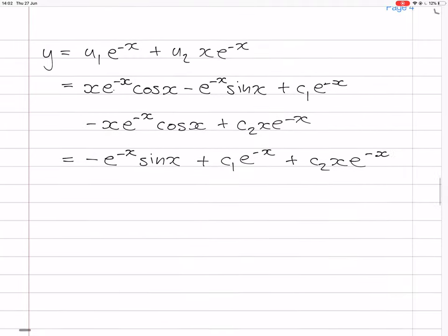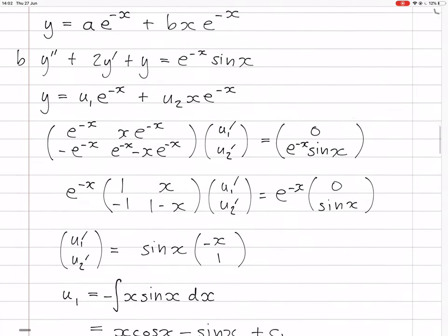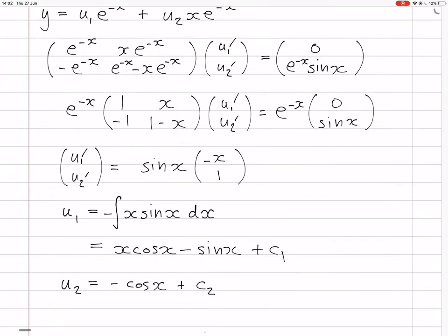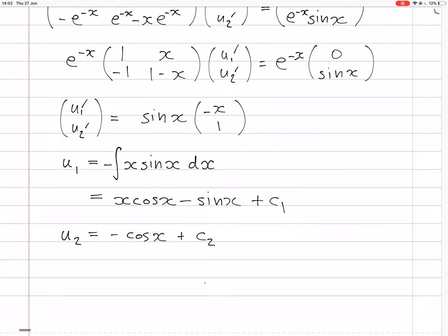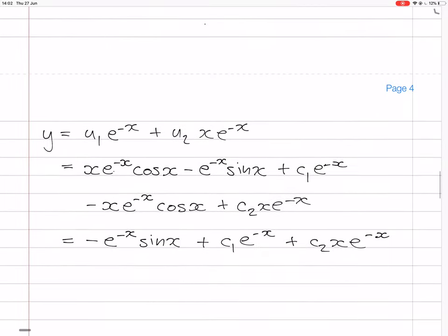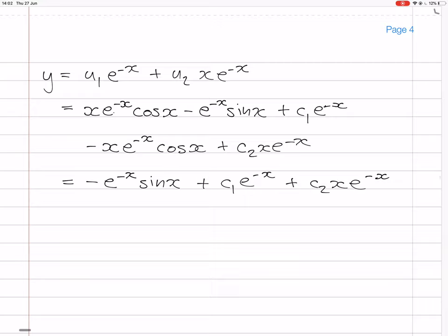So that's our final answer. For part 4b: write down the matrix equation, factor out the e^(-x) and inspect to find u1' and u2', then integrate and plug into the formula y = u1·y1 + u2·y2 and simplify. That's the whole variation of parameters method.